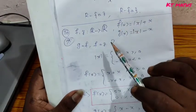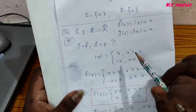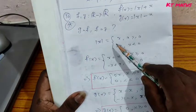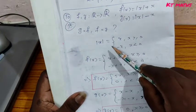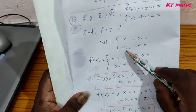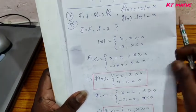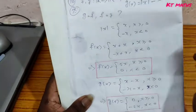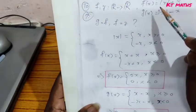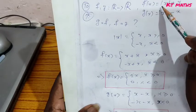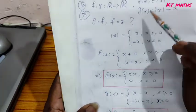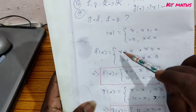We use the modulus definition. Modulus of x is defined as: x when x is greater than or equal to 0, and minus x when x is less than 0. Applying this definition to f of x equal to mod x plus x.